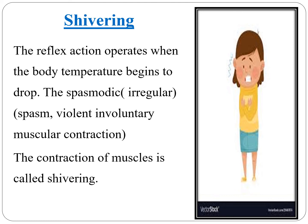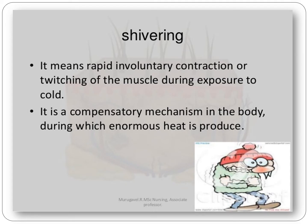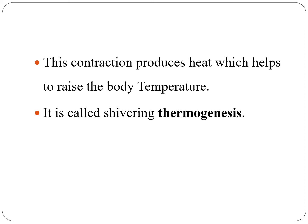Next is shivering. The reflex action operates when the body temperature begins to drop. Shivering is the spasmodic, violent, involuntary muscular contraction. It means rapid involuntary contraction or twitching of the muscles during exposure to cold. It is a compensatory mechanism in the body during which enormous heat is produced. This contraction produces heat which helps to raise the body temperature. It is called shivering thermogenesis.